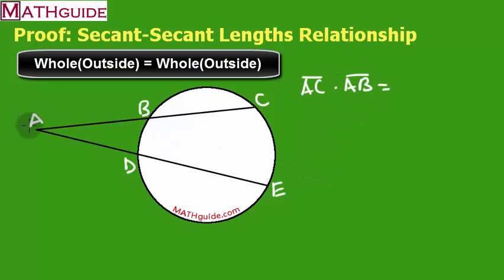And then let's do the other one. We're going to take the whole distance, that would be AE, and multiply it by its outside distance, AD. So I'm going to show that this relationship works within this situation that I have here.